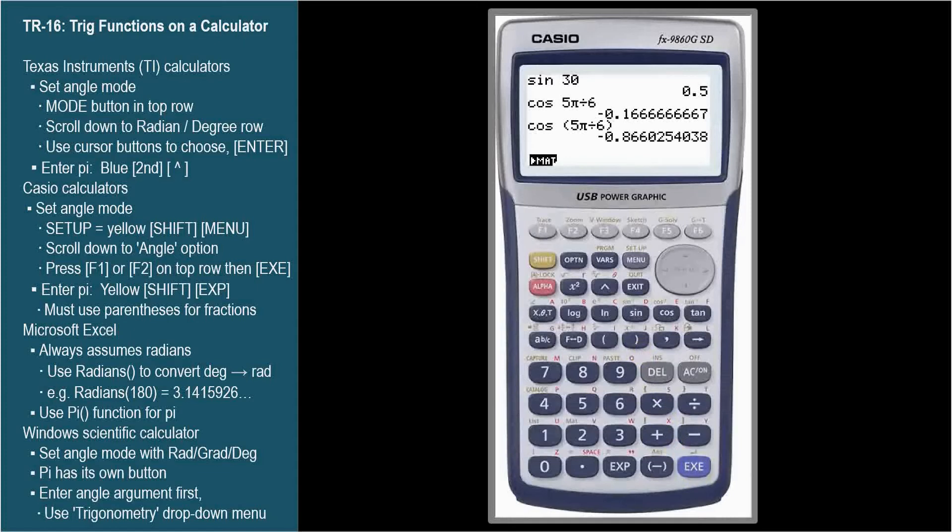Negative 0.866 is the approximate value of negative square root of 3 over 2. I think the takeaway is to always use parenthesis to be as clear and precise as possible to get the answer you expect.